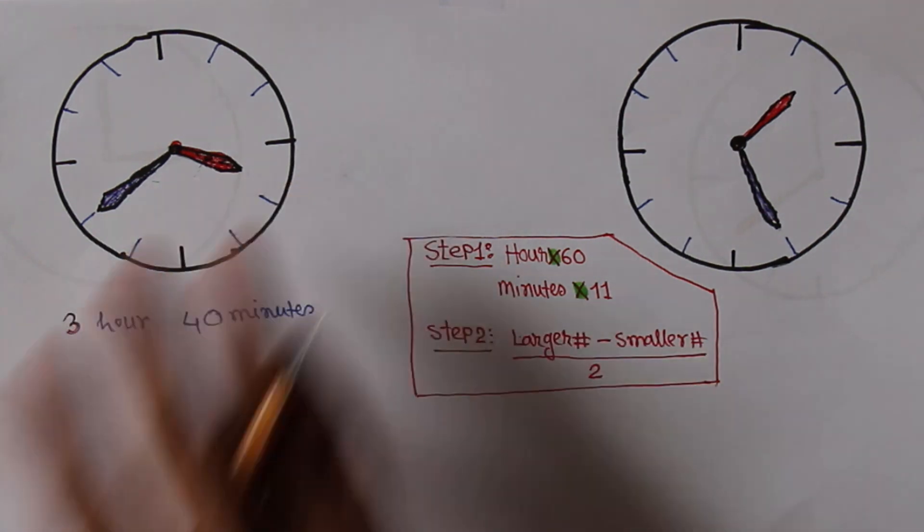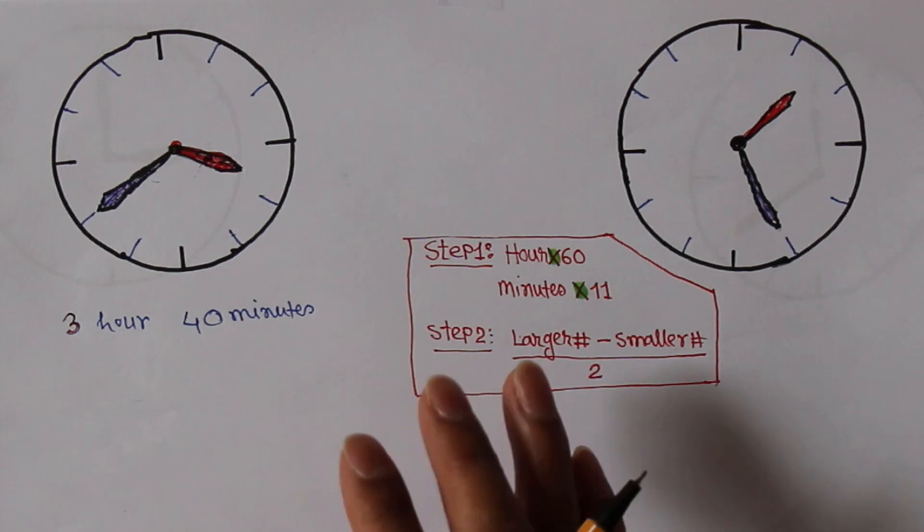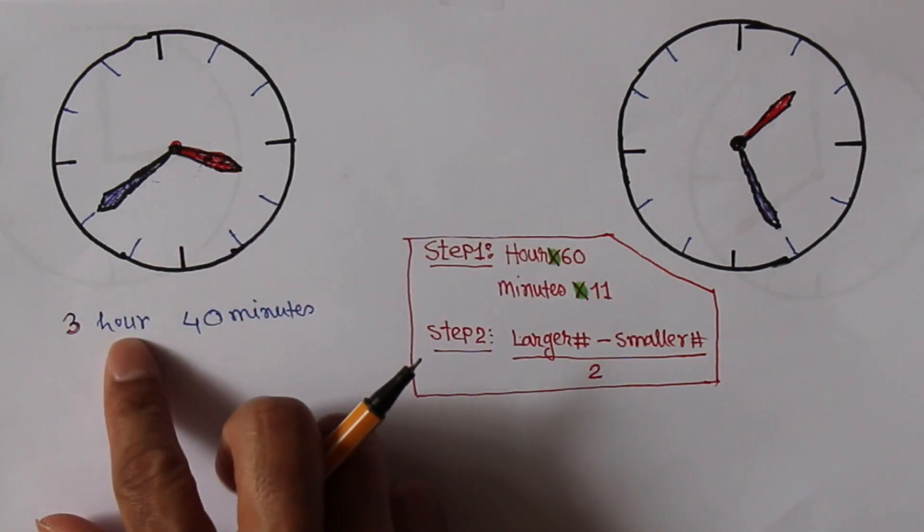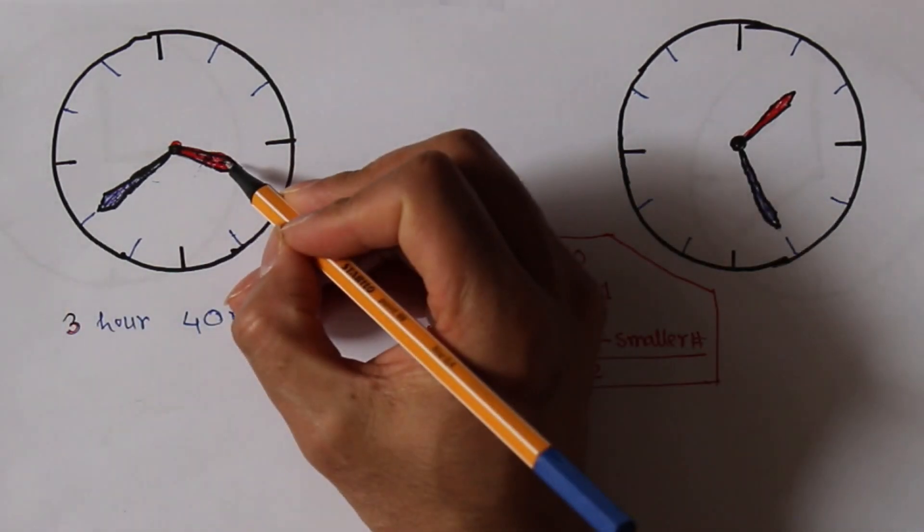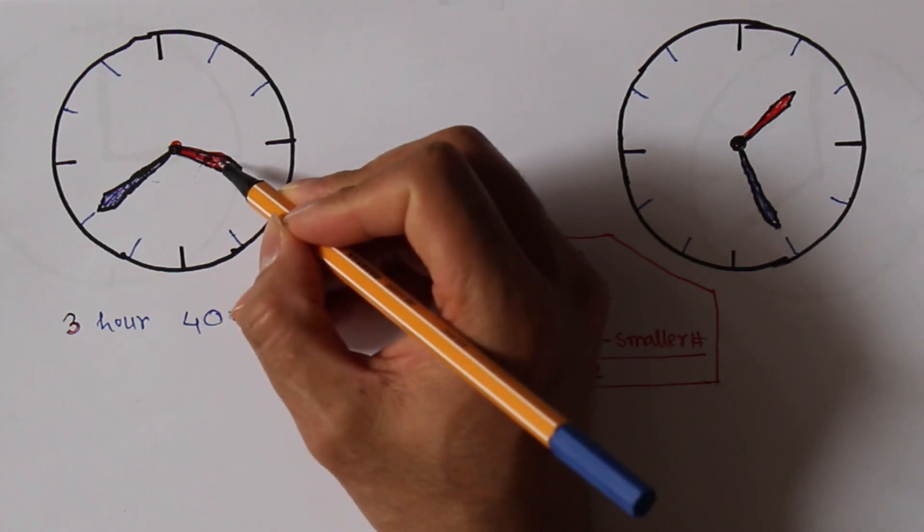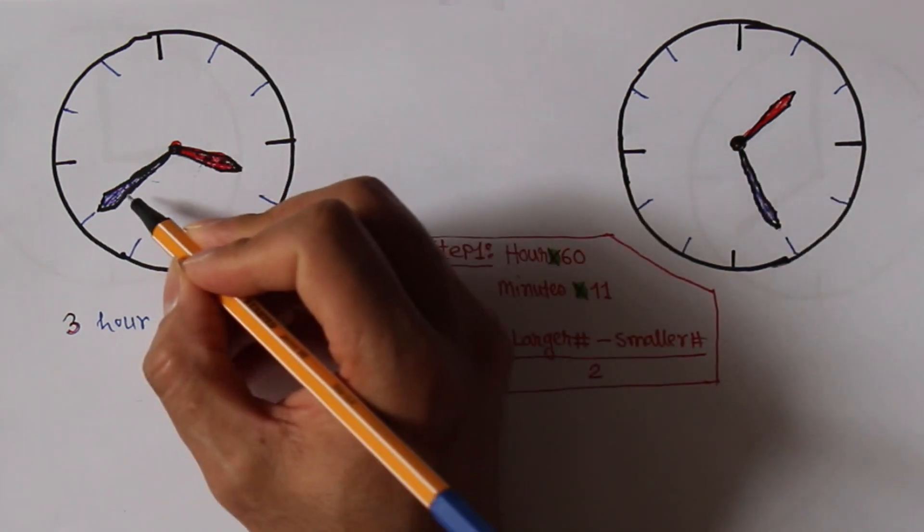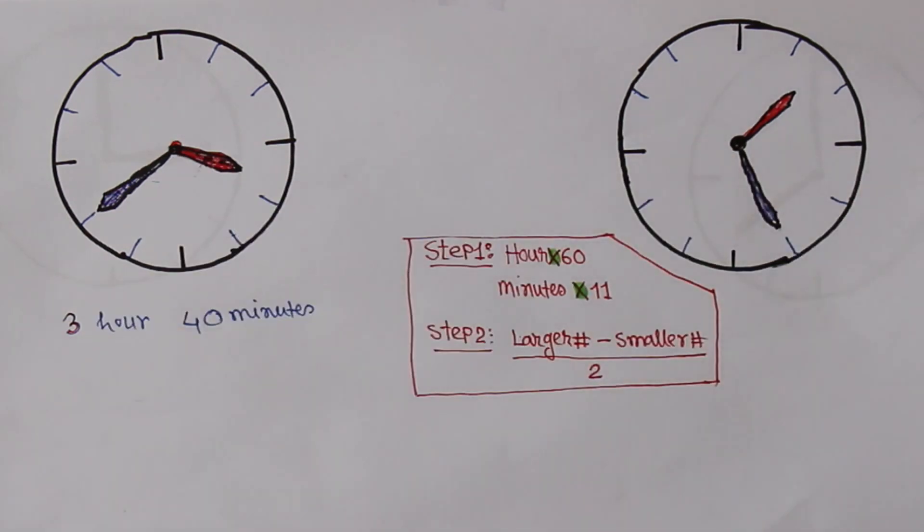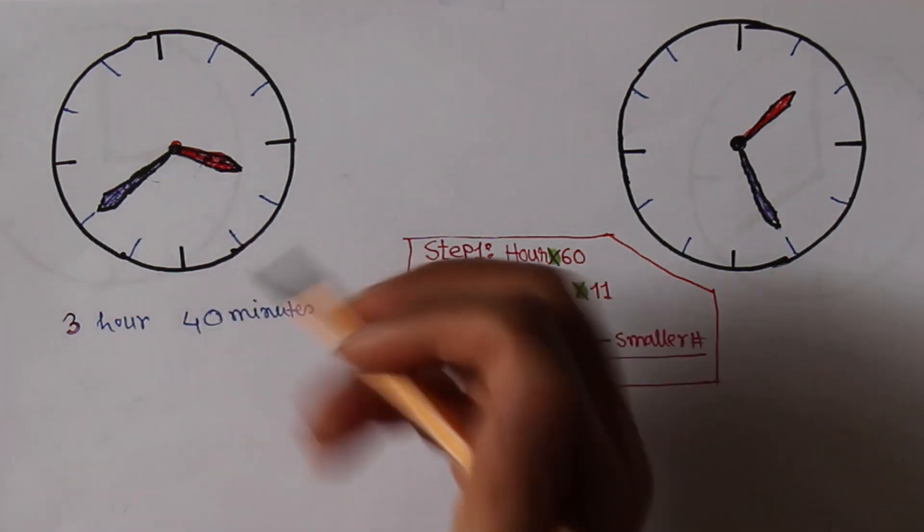Let's start with this clock. This clock is showing 3 o'clock and 40 minutes. This smaller red arm represents the hour and this arm represents the minutes. So I will apply a small trick. The trick has two steps to find out the angle between these two arms.